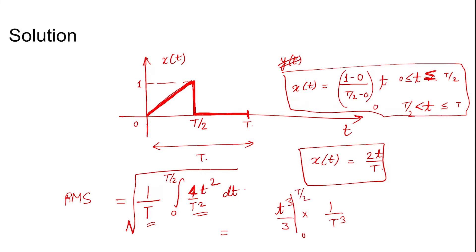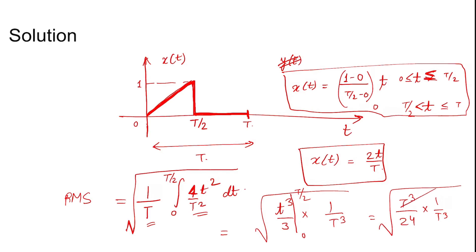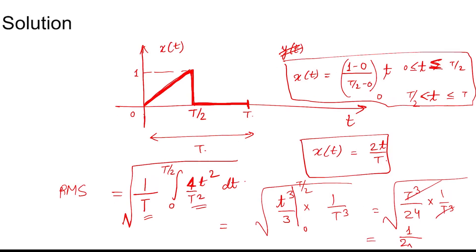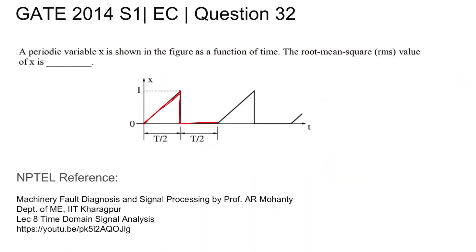Evaluating between the limits 0 to T/2, we get T³ over 24 times 1 over T³, all under the square root. This comes out to 1 over 2√6, which is approximately 0.2. So the answer is 1/(2√6) ≈ 0.2. Thank you.